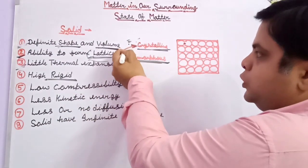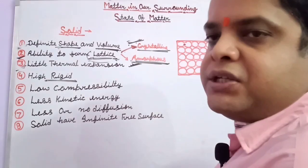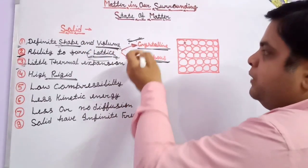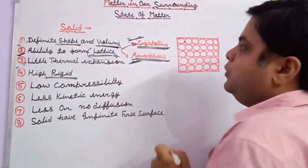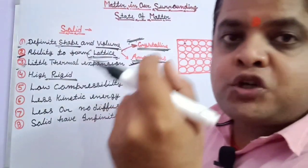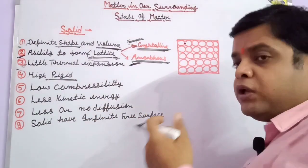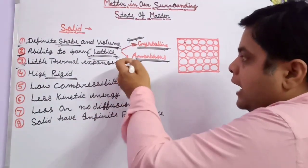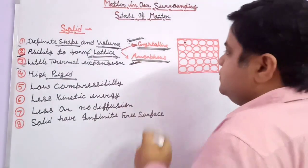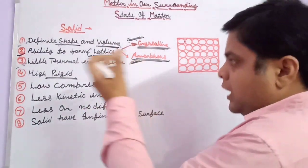Solids form two conditions based on lattice: crystalline and amorphous. When solids are arranged in a definite pattern and form a definite geometry, they are crystalline solids — for example, crystals of sugar and salt. If there is no definite geometry, the solids form amorphous conditions — for example, sulfur powder is an example of an amorphous solid.